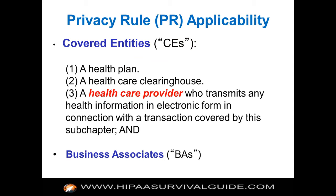Who does the privacy rule apply to? Really two groups: covered entities and business associates. Covered entities include health plans, healthcare clearinghouses, and healthcare providers who transmit any health information in electronic form in connection with the transaction covered by this subchapter. The general rule for business associates — any business partner that creates, receives, maintains, or transmits PHI on behalf of the covered entity to perform a business function for the covered entity — has been in the privacy rule since the beginning.